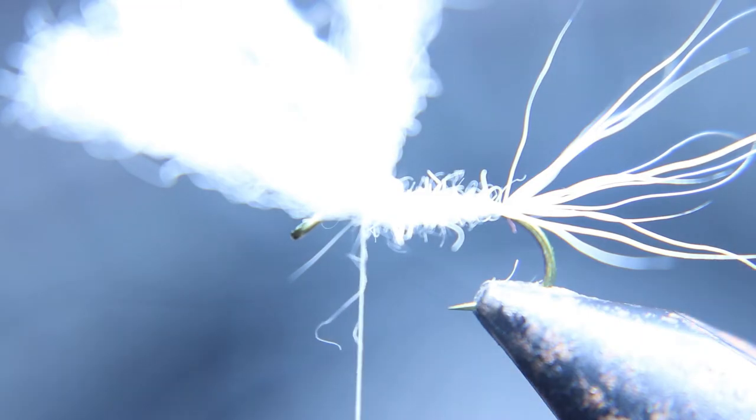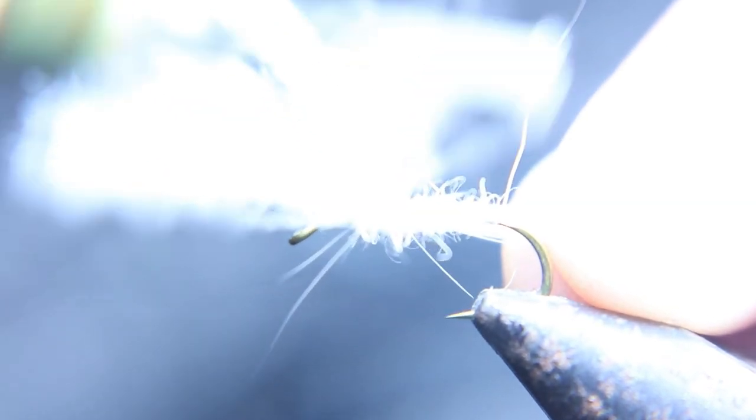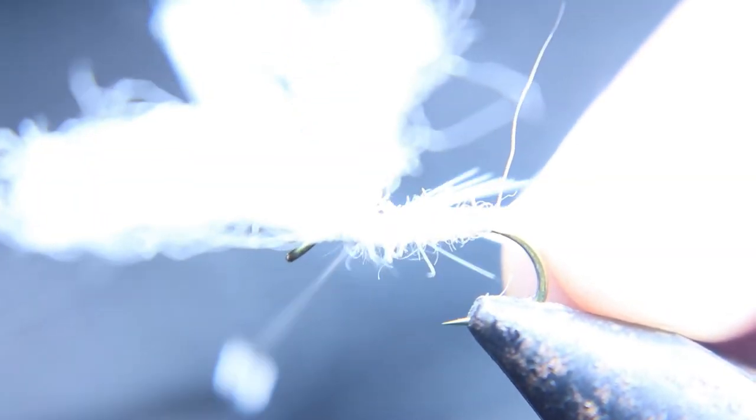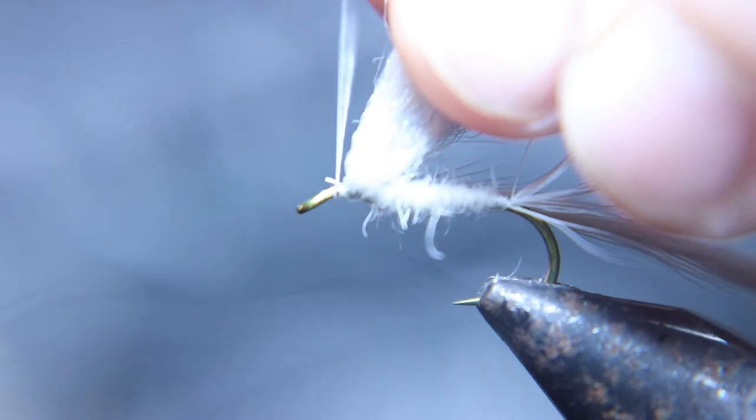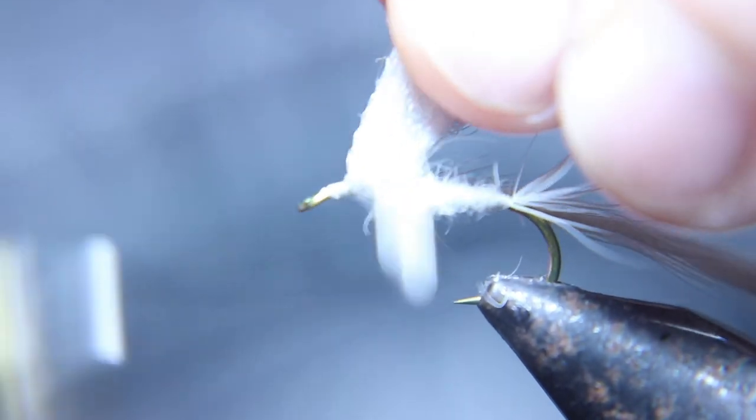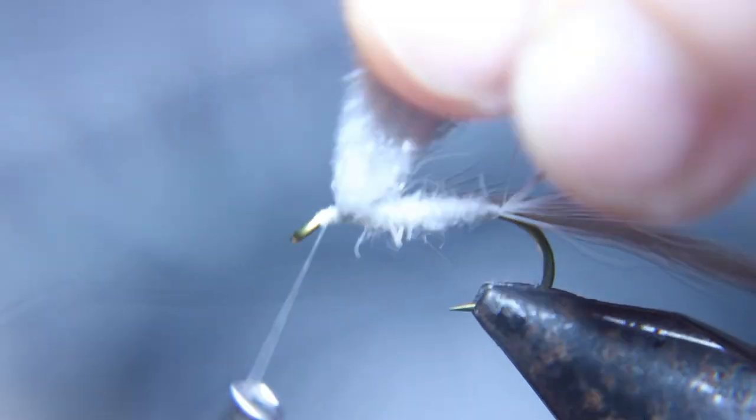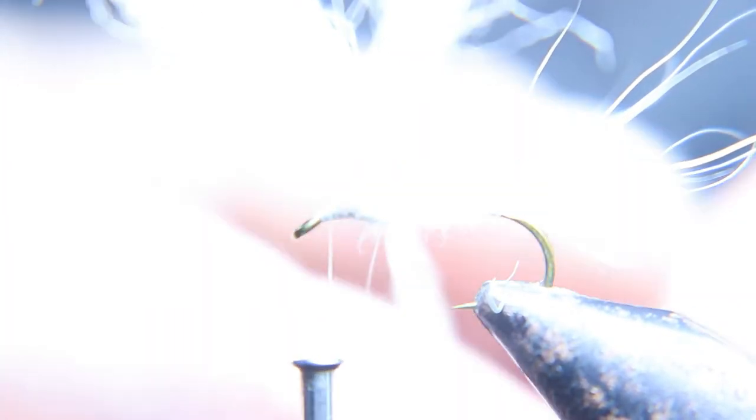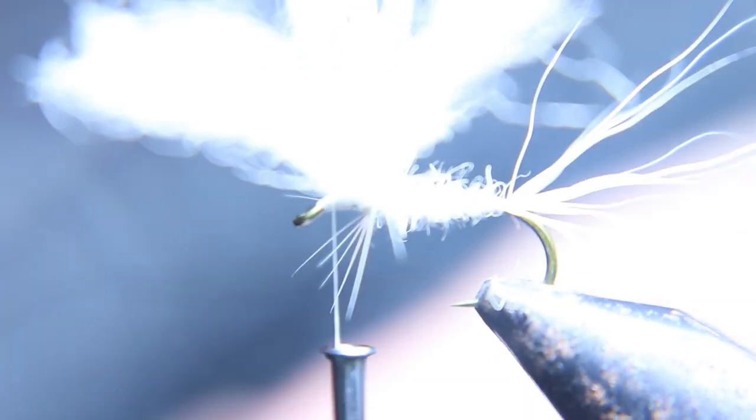Now I tie in, I'm using a saddle hackle that's a light cream. You could use a white or a really light dun hackle as long as it's a really light color. And I tie that in and I'm going to wrap that towards the eye. Wrap it three times behind the wing, two times in front of the wing, and tie it off. Form your head. But we're not done. Don't go anywhere.